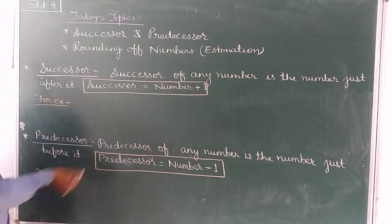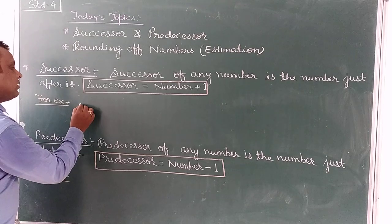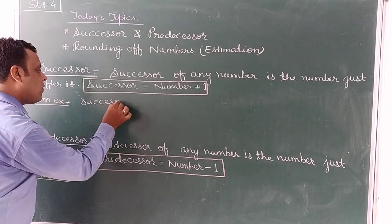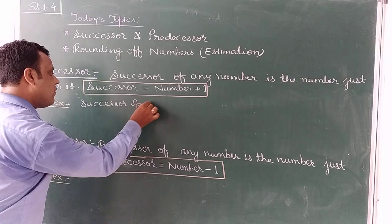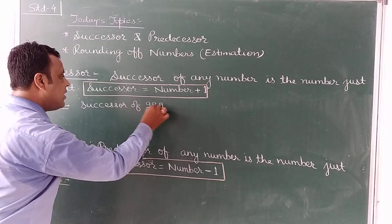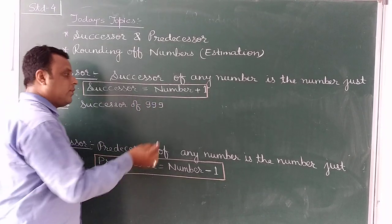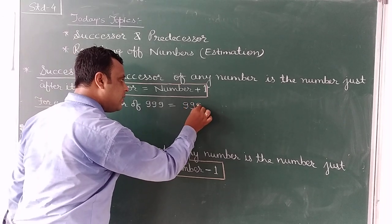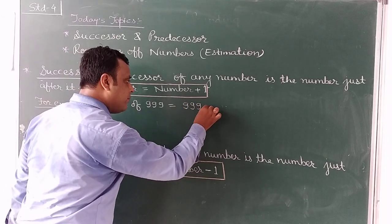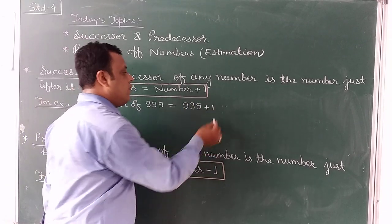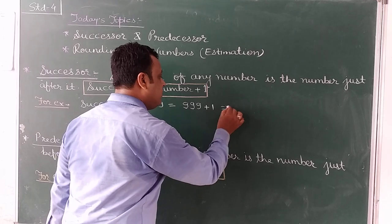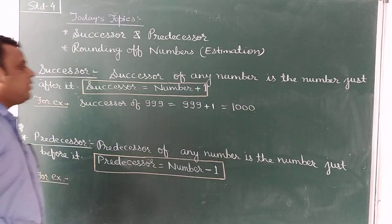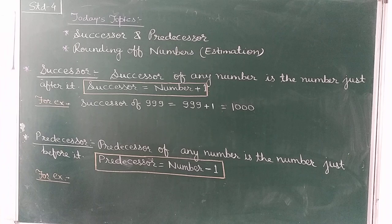For example, succession of 999. We write 999 plus 1. When we add 1, we get 1000. So 1000 is the succession of 999.